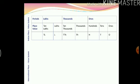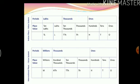Now let us have a look at the international place value system. Here too we have three periods. In the first period, the ones period, we have three place values just like the Indian place value system: ones, tens and hundreds. In the second period, the thousands period, we have three place values: thousands, ten thousands and hundred thousands. And in the third period, millions, we have one place value: millions. We do have more place values, but for now we will learn only till millions.